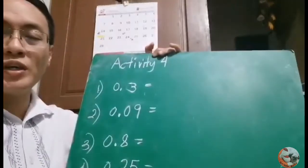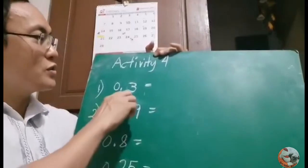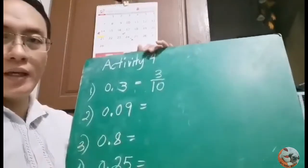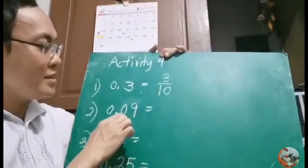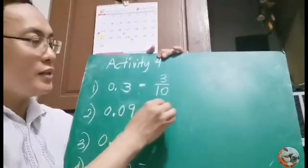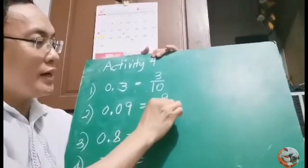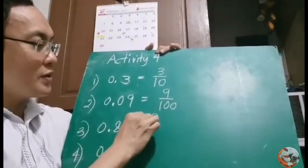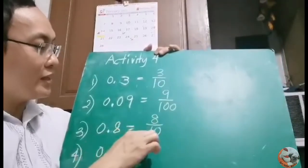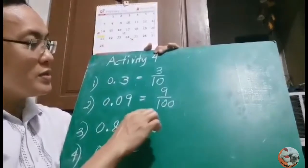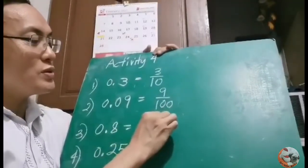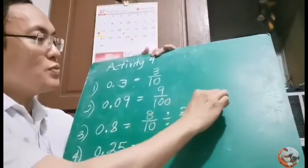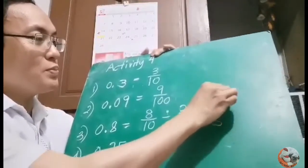Activity 4 is all about changing decimals to fractions. 0.3 — that is 3 tenths, so it equals 3 over 10. 0.09 — this is read as 9 hundredths, so the denominator is 100: 9 over 100. 0.8 — that is 8 tenths, so it is 8 over 10. Since one decimal place means tenths. We can reduce to lowest terms by dividing by the GCF of 2: 8 divided by 2 is 4, and 10 divided by 2 is 5. The answer is 4 fifths.